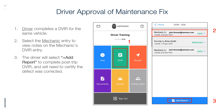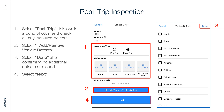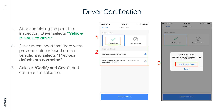Post-trip Inspection: Add a new report to complete a post-trip inspection. Select post-trip, take walk-around photos, and check off any identified defects. Select Add or Remove Vehicle Defects, then select Done after confirming no additional defects are found, and select Next. Review the defects to ensure no new defects exist and that the original defect was corrected. Driver Certification: After completing the post-trip inspection, the driver selects that the vehicle is safe to drive, confirms previous defects are corrected, then selects Certify and Save.